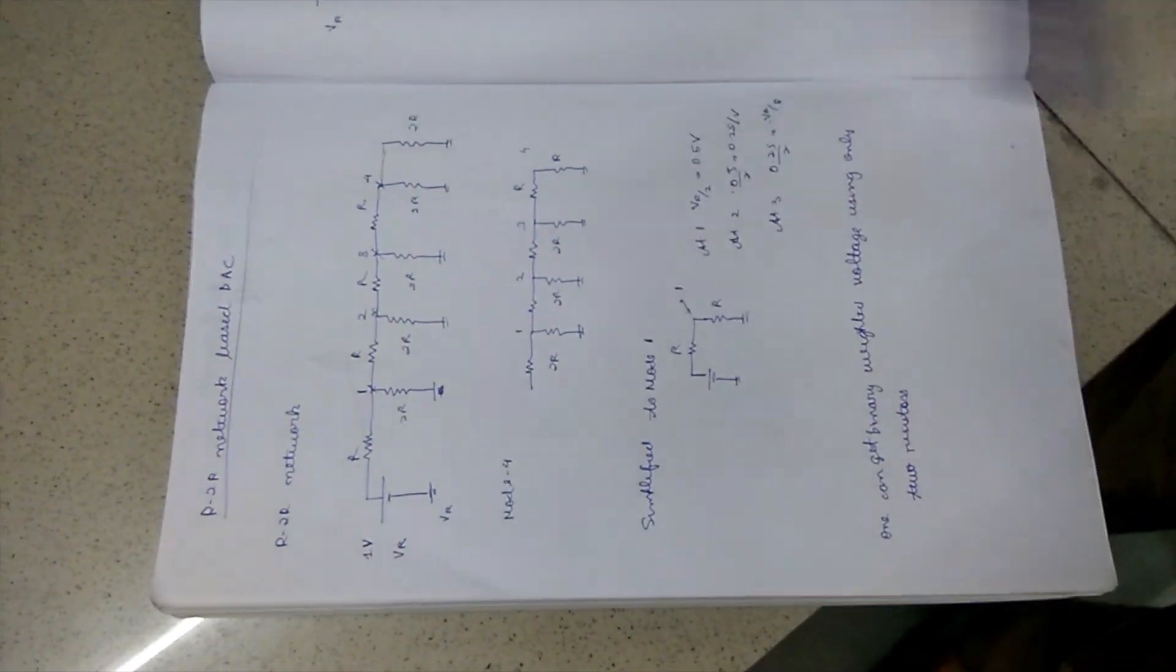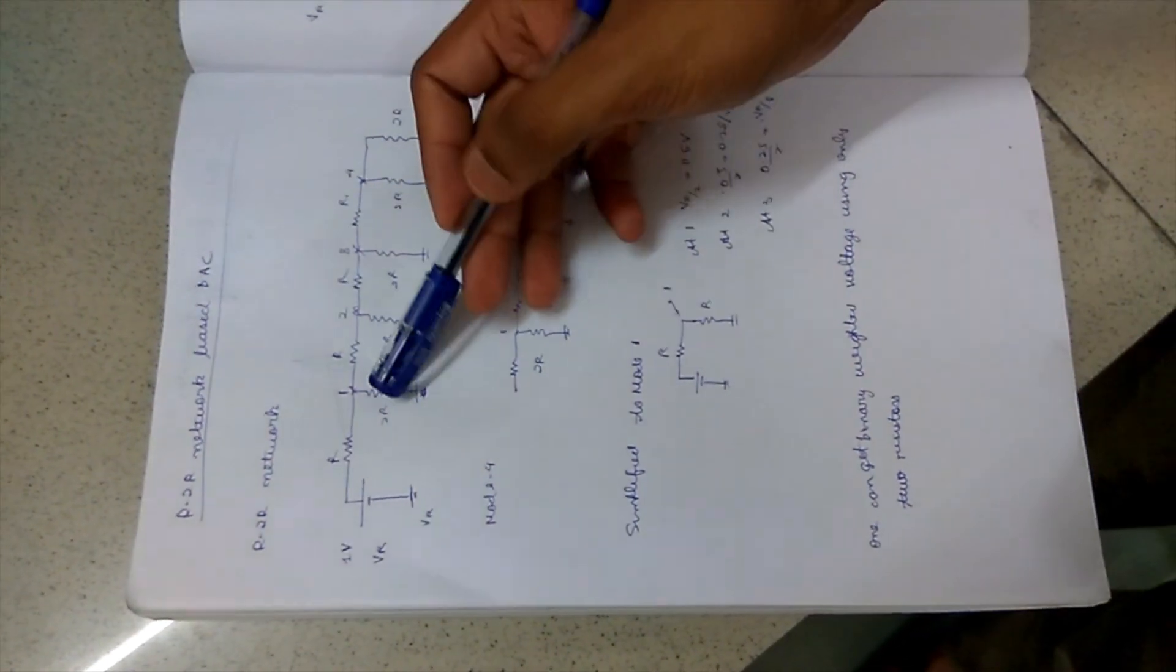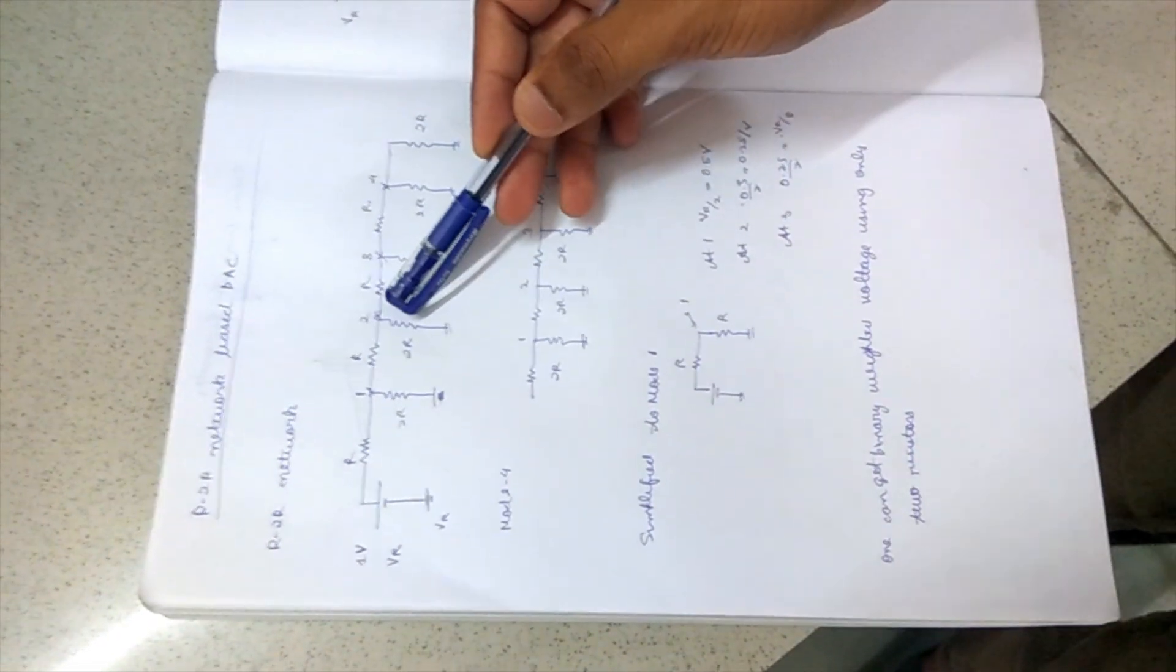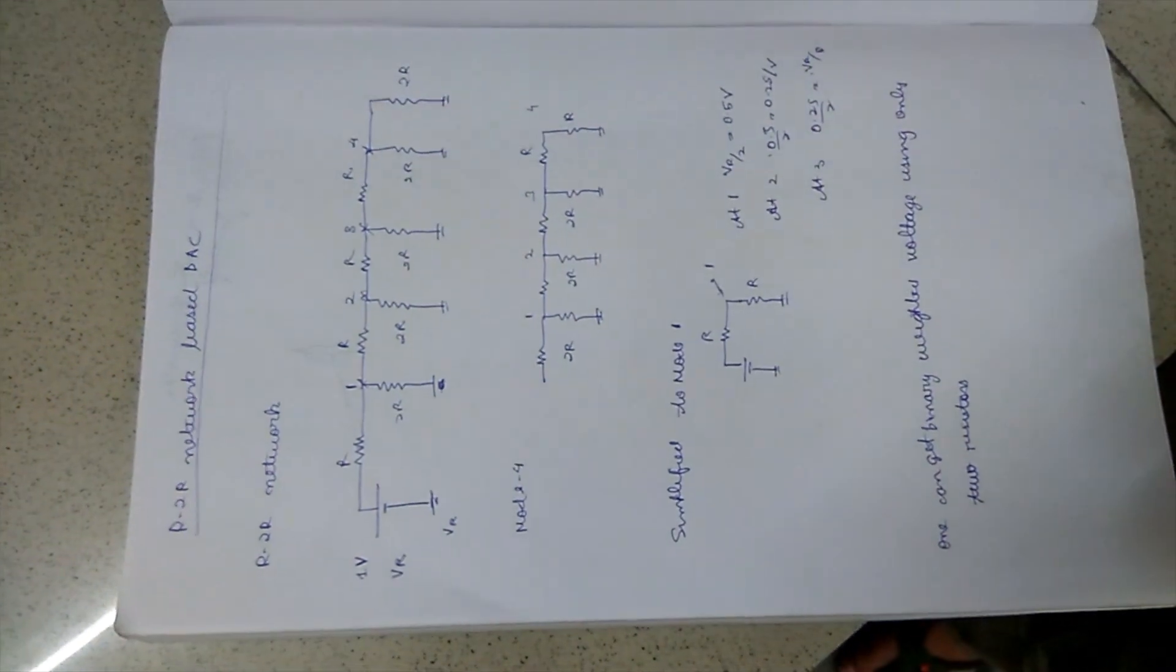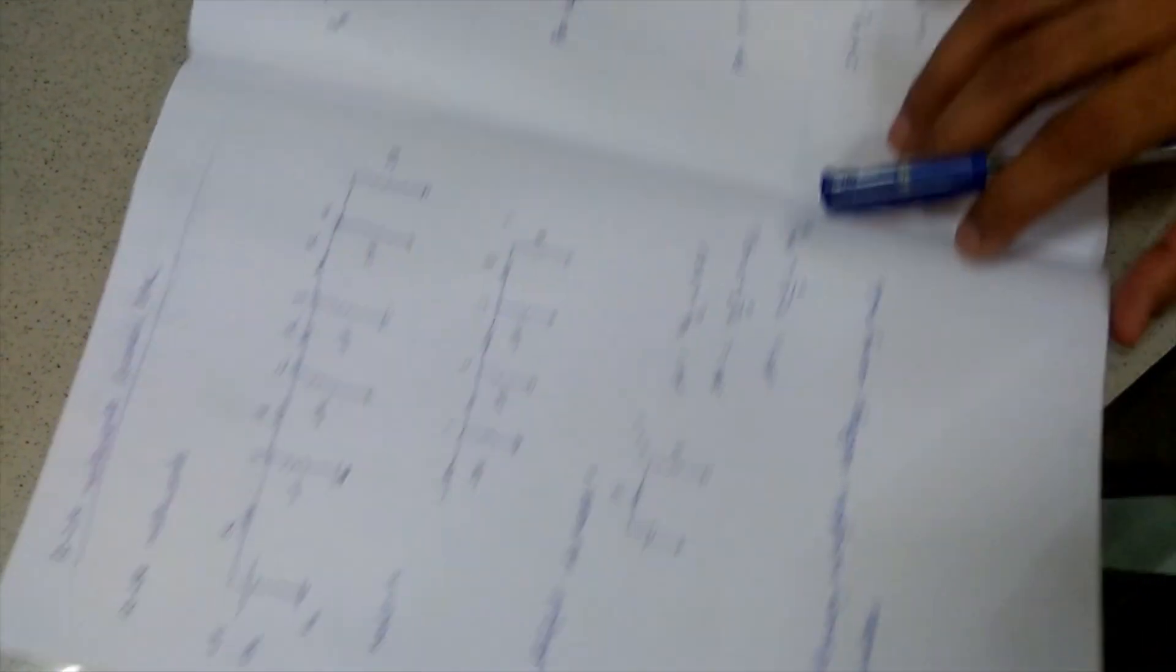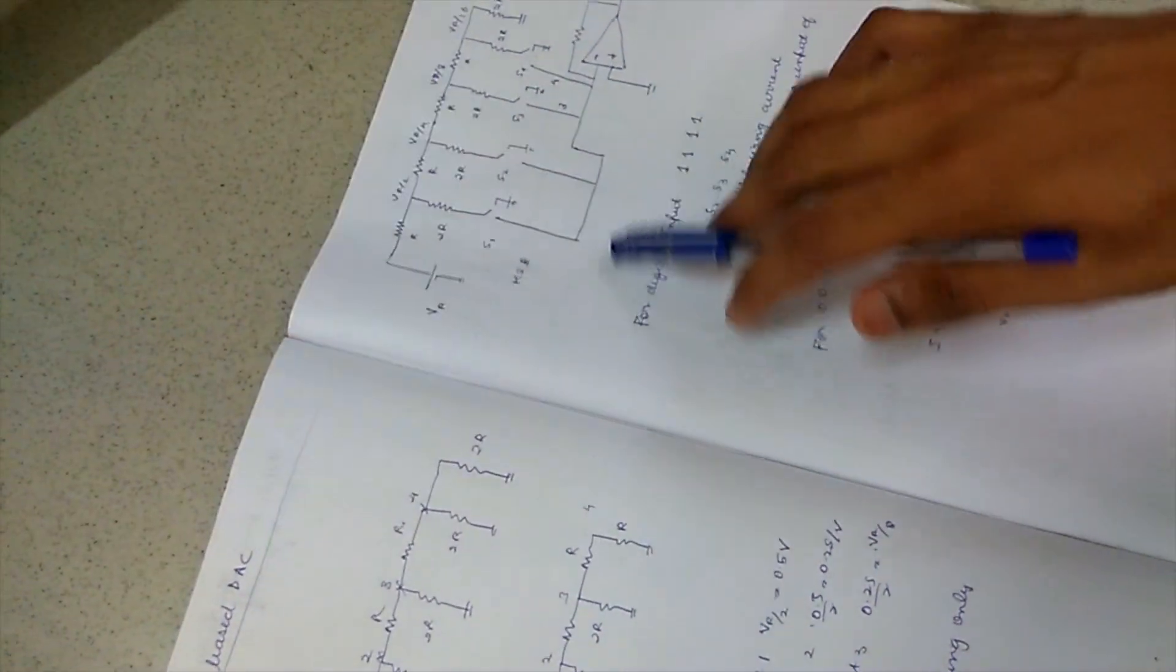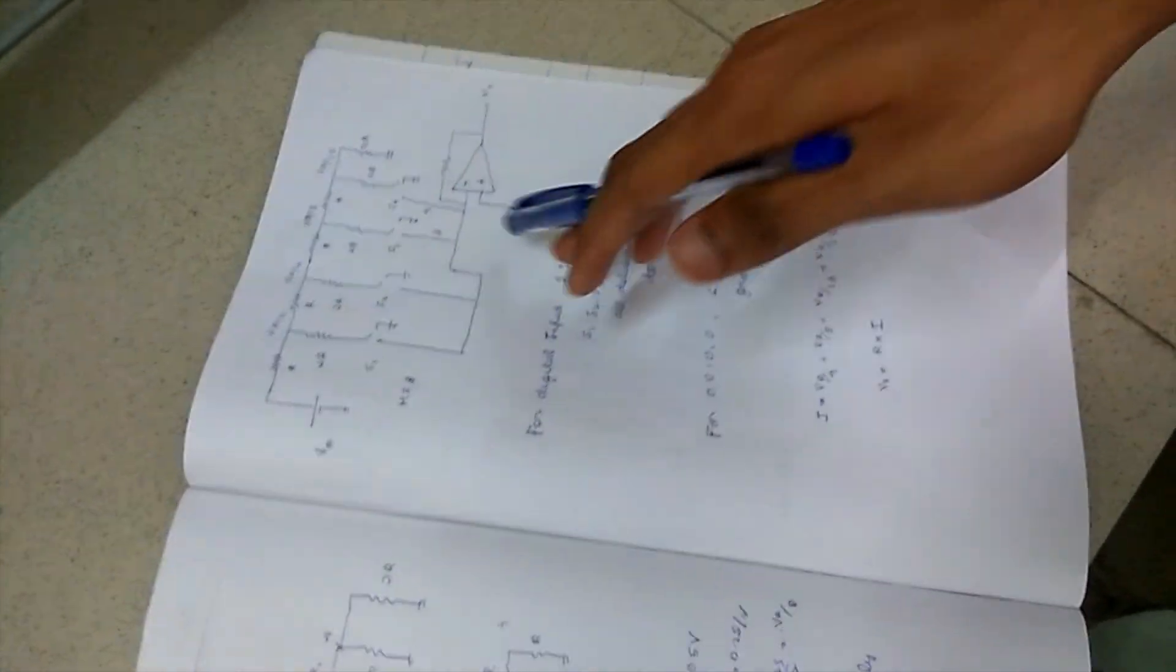At node 1, the voltage is Vr by 2. At node 2, the voltage is Vr by 4. At node 3, the voltage is Vr by 8. And at node 4, the voltage is Vr by 16. This is the circuit used in the digital-to-analog converter.